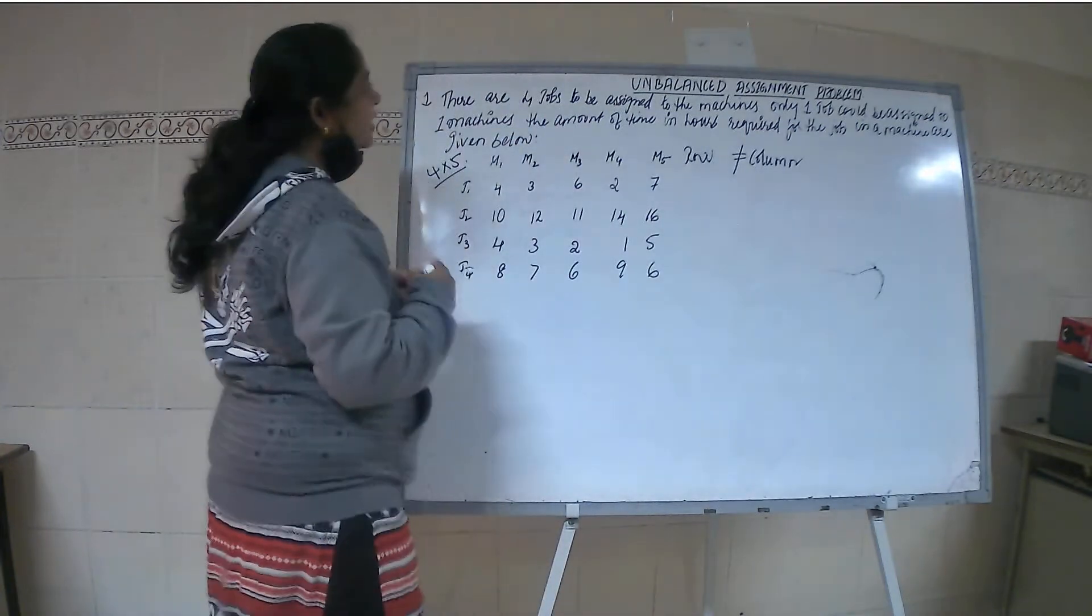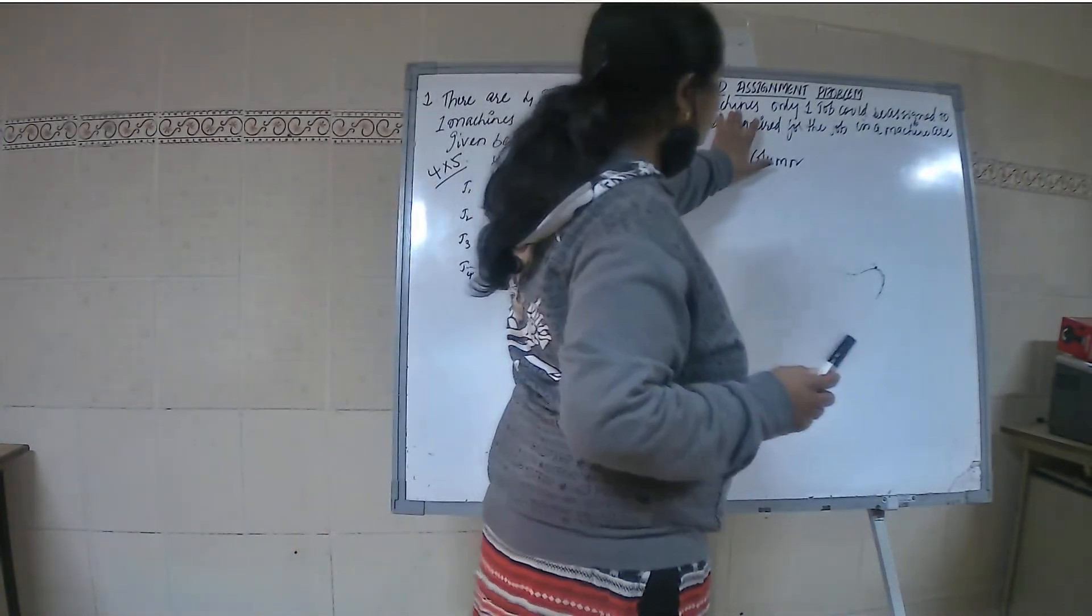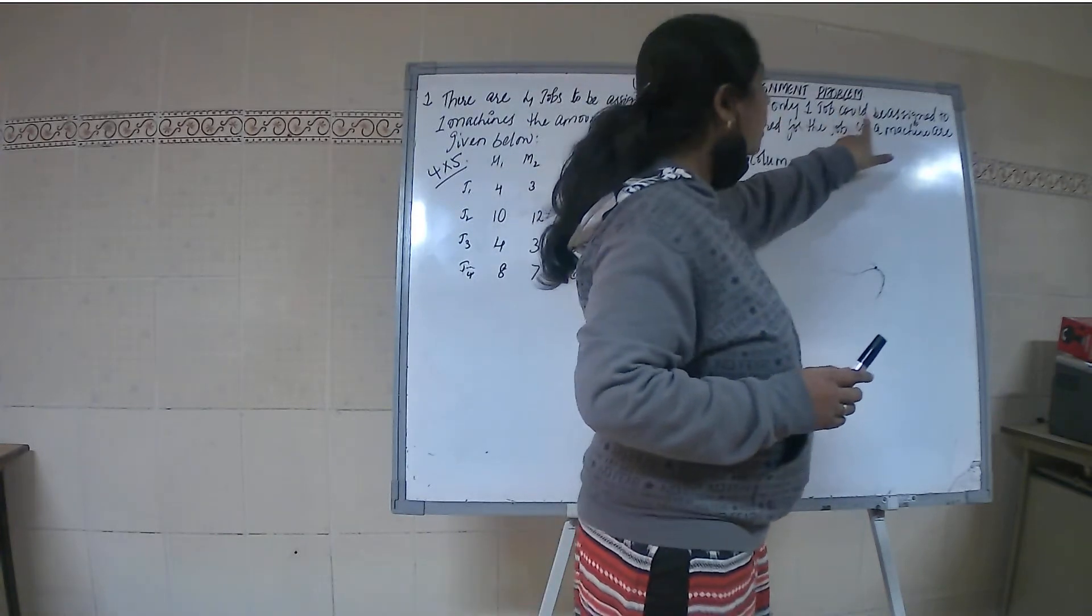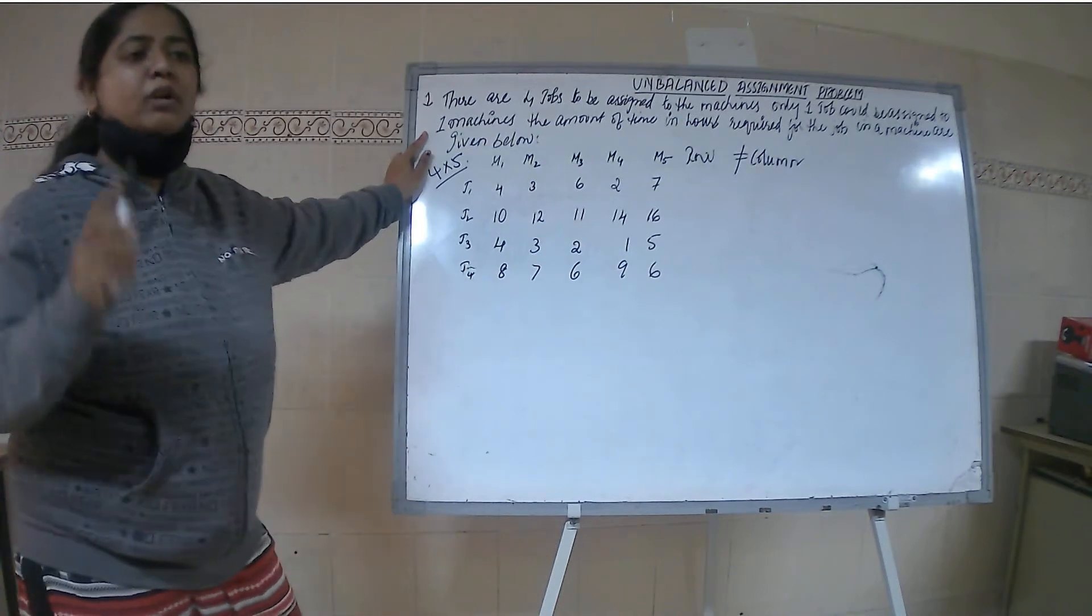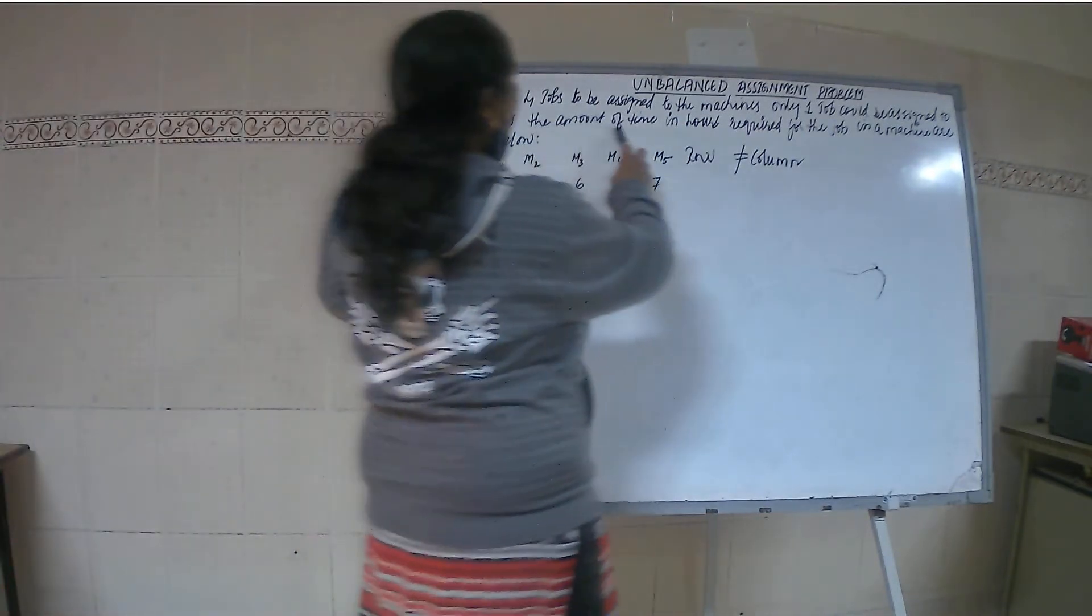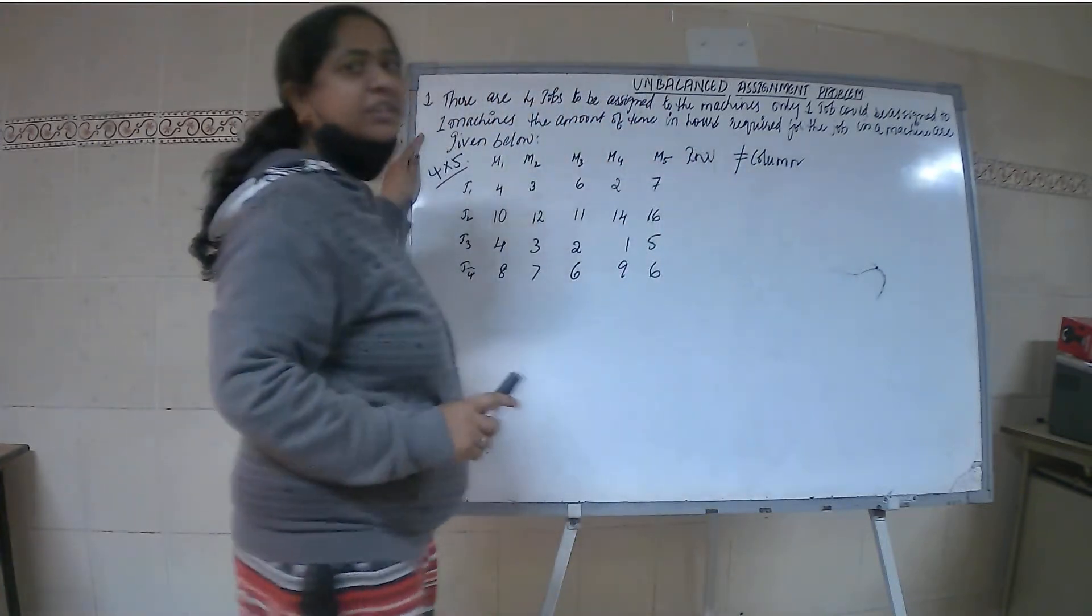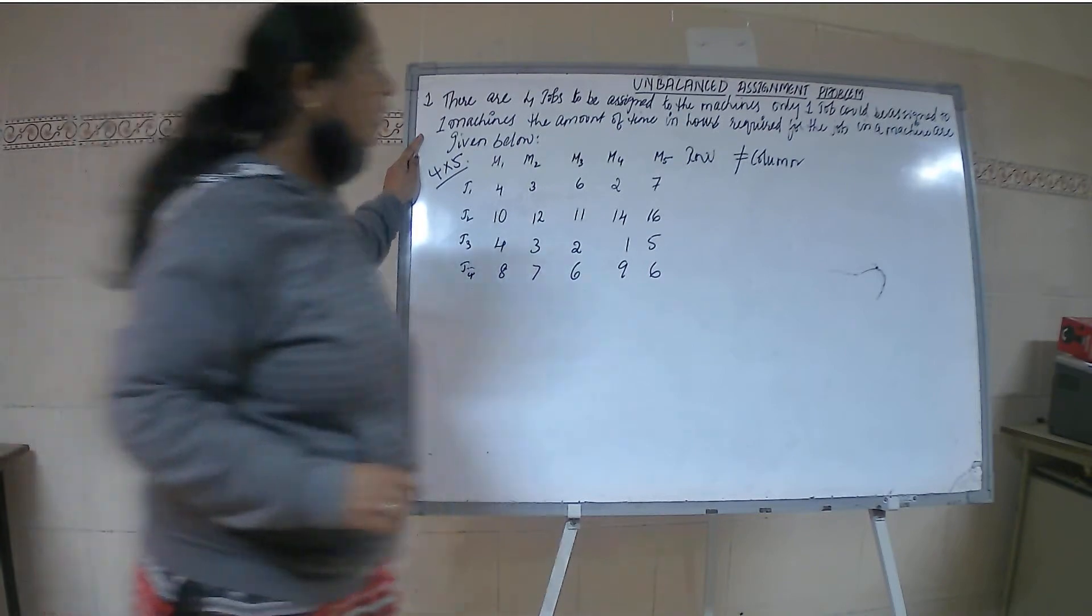The question given here is there are 4 jobs to be assigned to the machines. Only 1 job could be assigned to 1 machine. The amount of time is in hours, so you have to get the answer in hours.